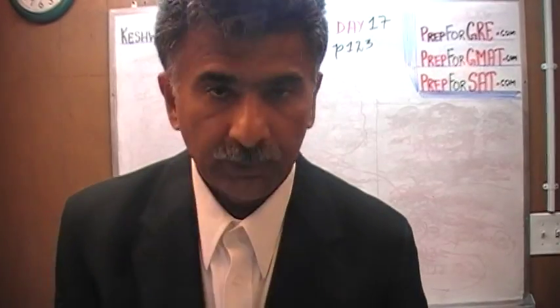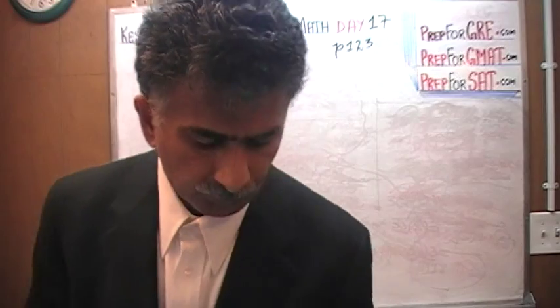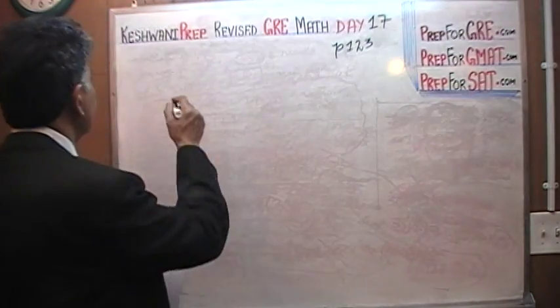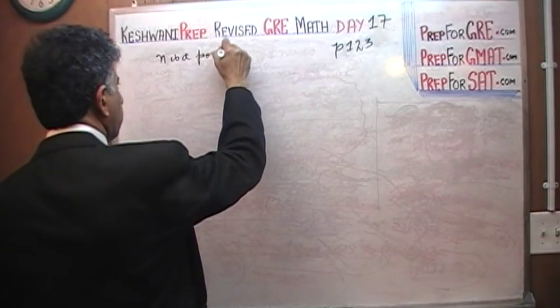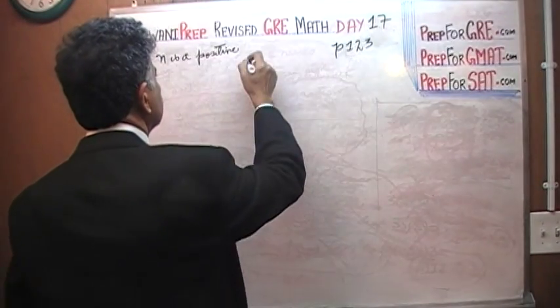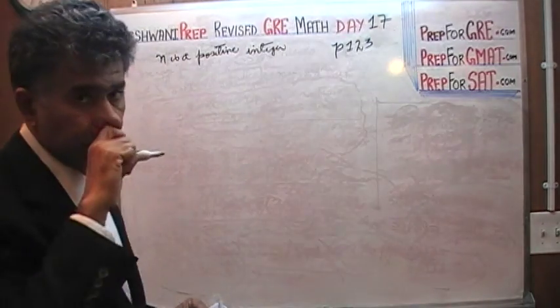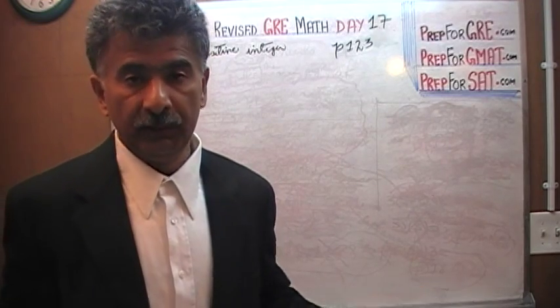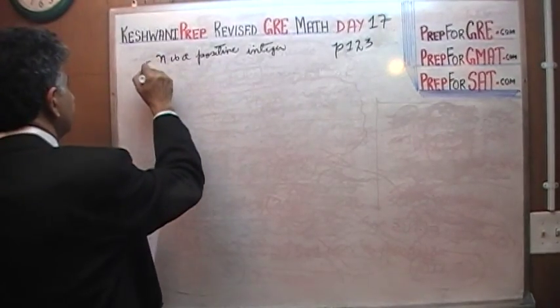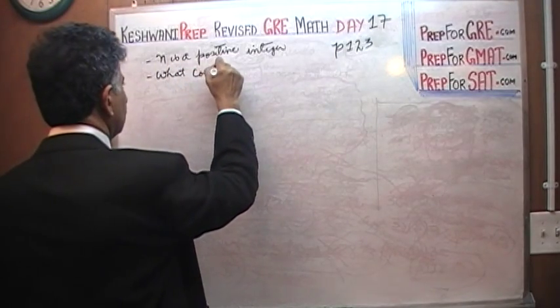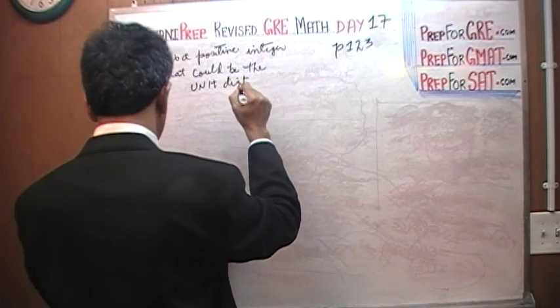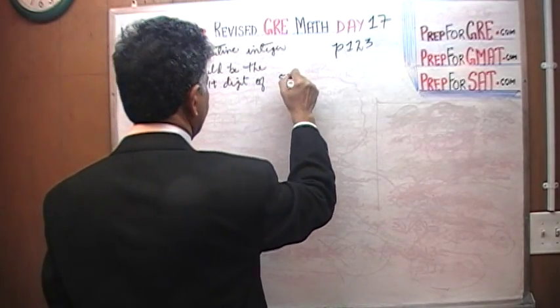Please turn to it and read the question with me. It says, which of the following could be the unit digits of 57 raised to N, where N is a positive integer? What does an integer mean? It's just a fancy way of saying a whole number, a positive whole number like 1, 2, 3. It cannot be a fraction, it cannot be negative. The question simply is, what could be the unit digit of 57 raised to N?